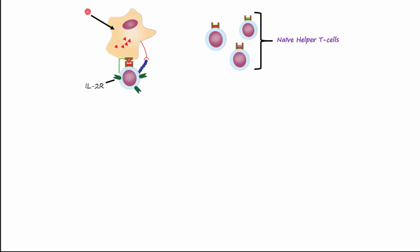T helper cells will also produce IL-2, which will bind to IL-2 receptors and cause an autocrine activation, bringing about proliferation of the T helper cells. Later in this video we'll come back to the activated T helper cells and show their role in activating B cells for the production of antibodies.